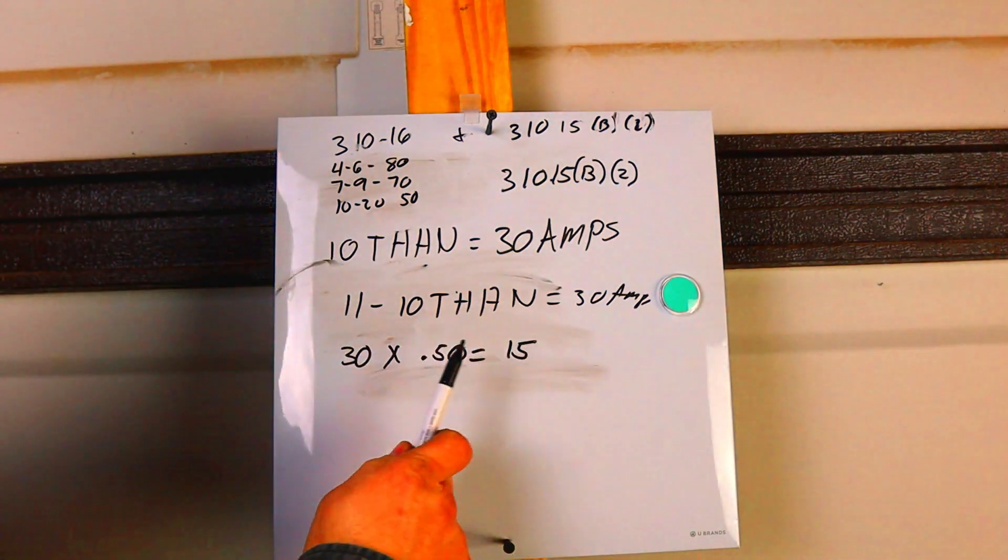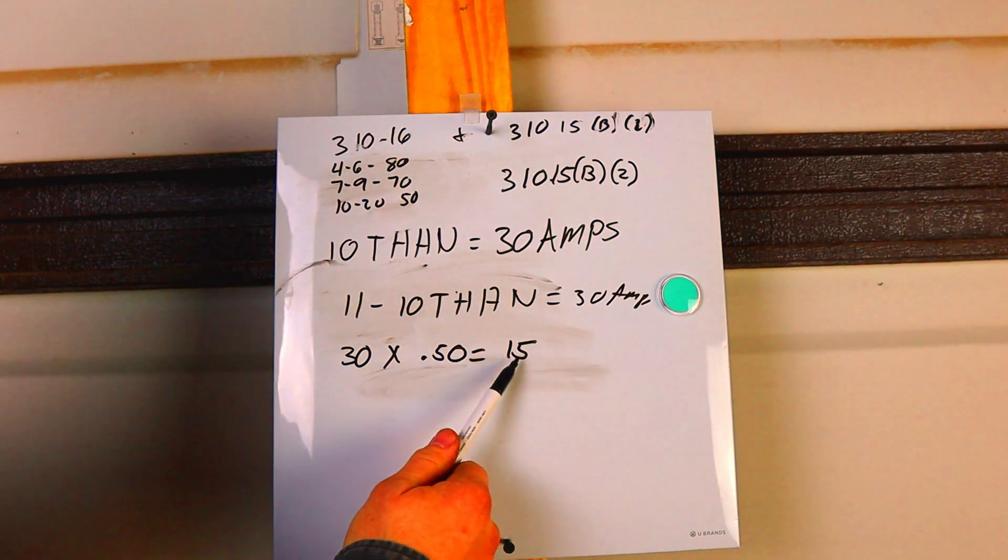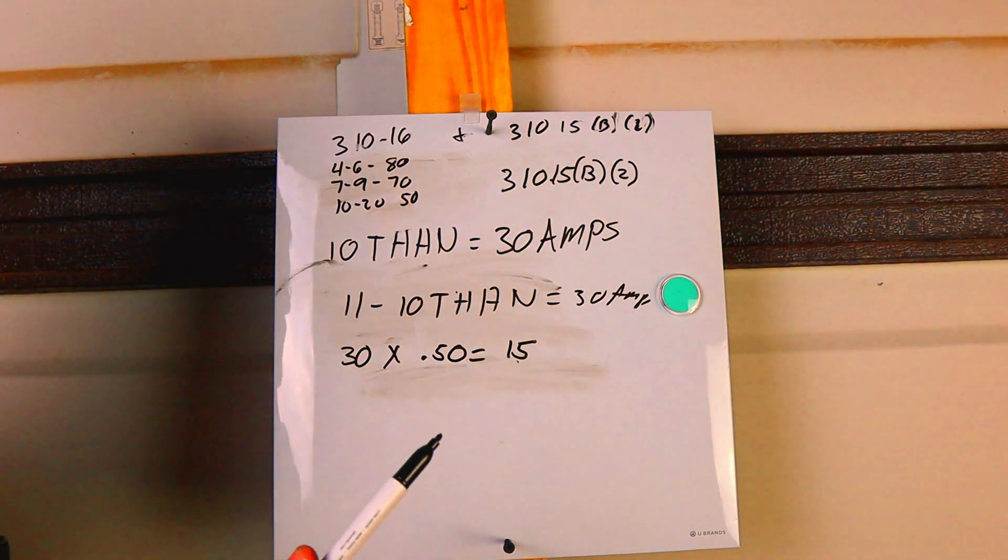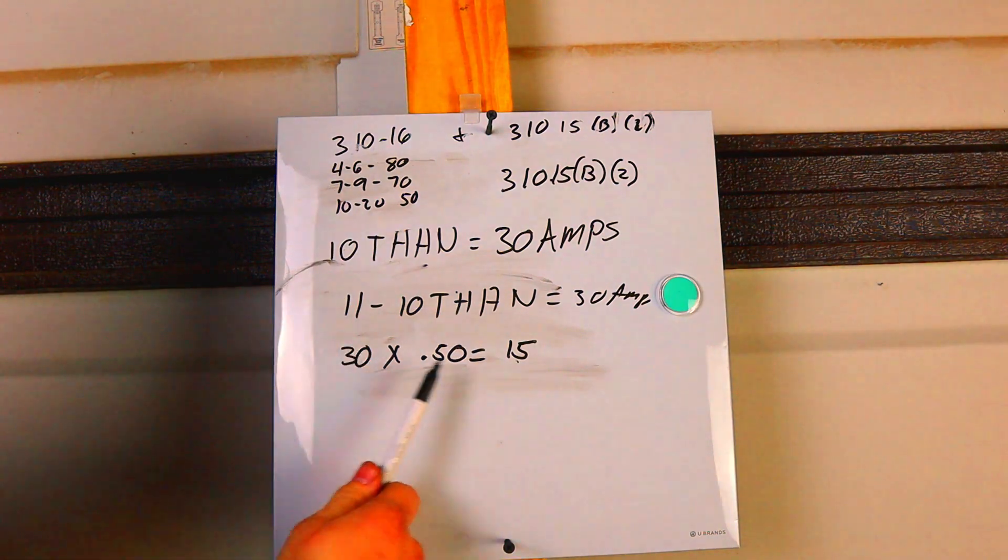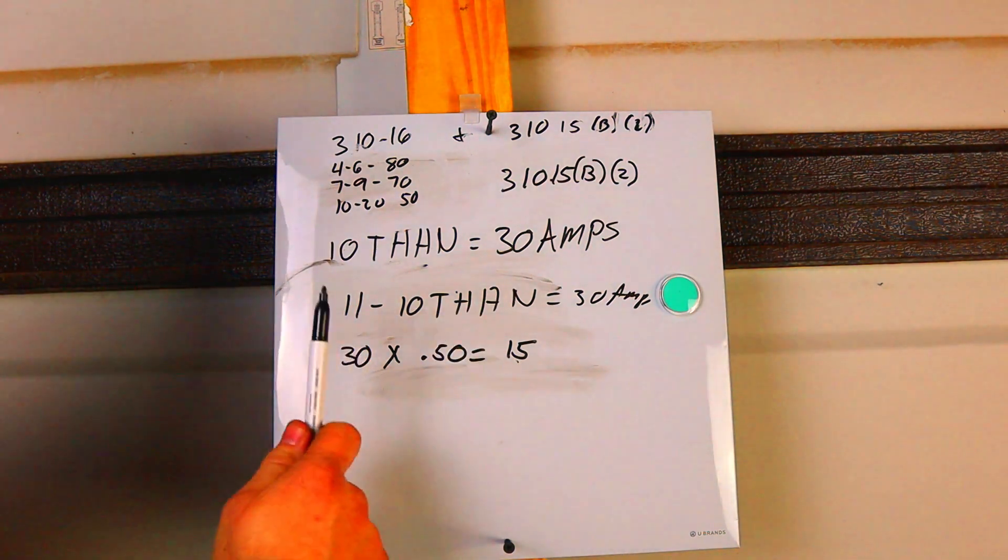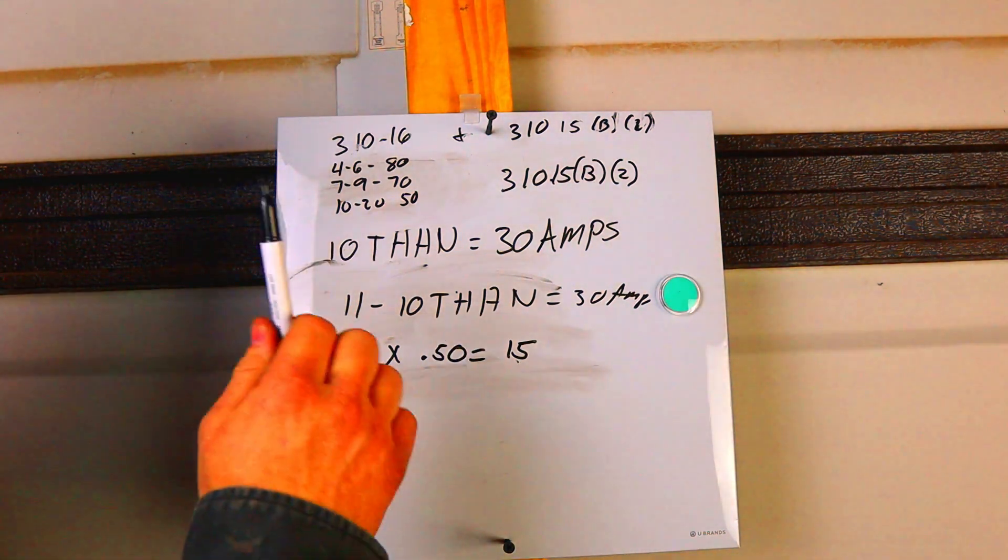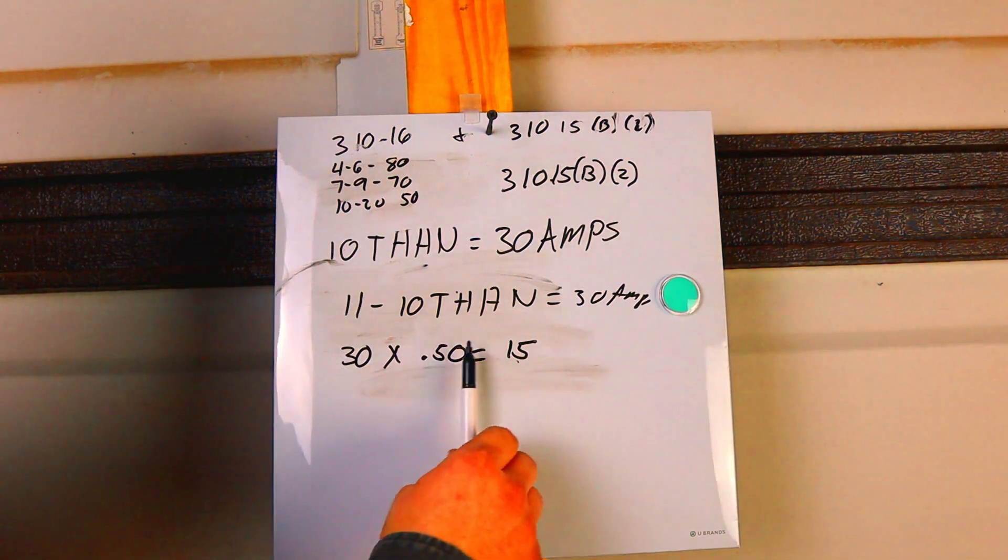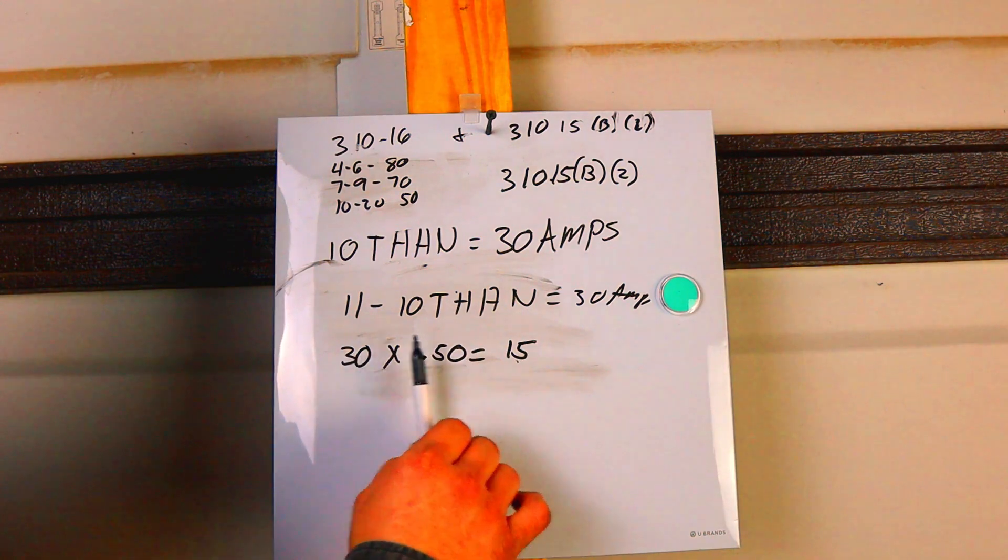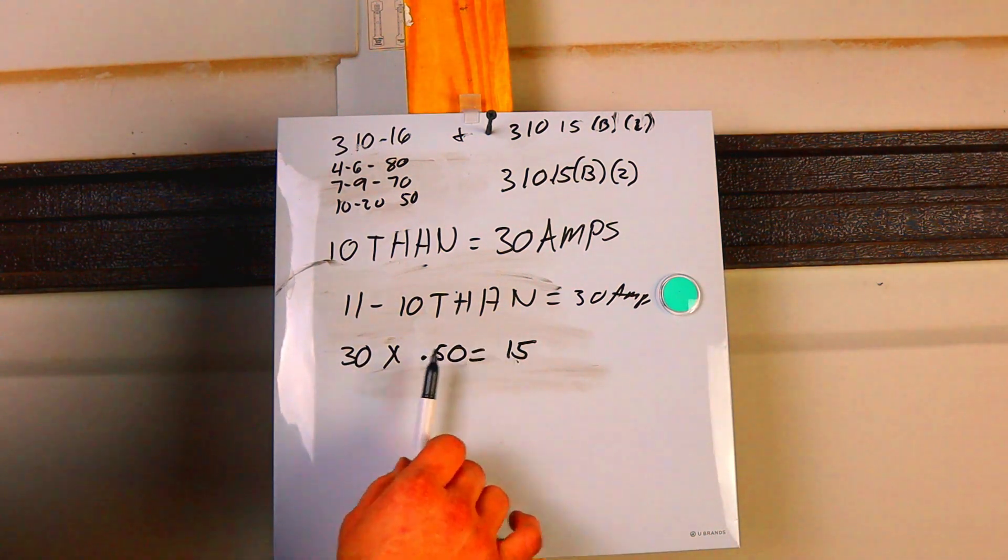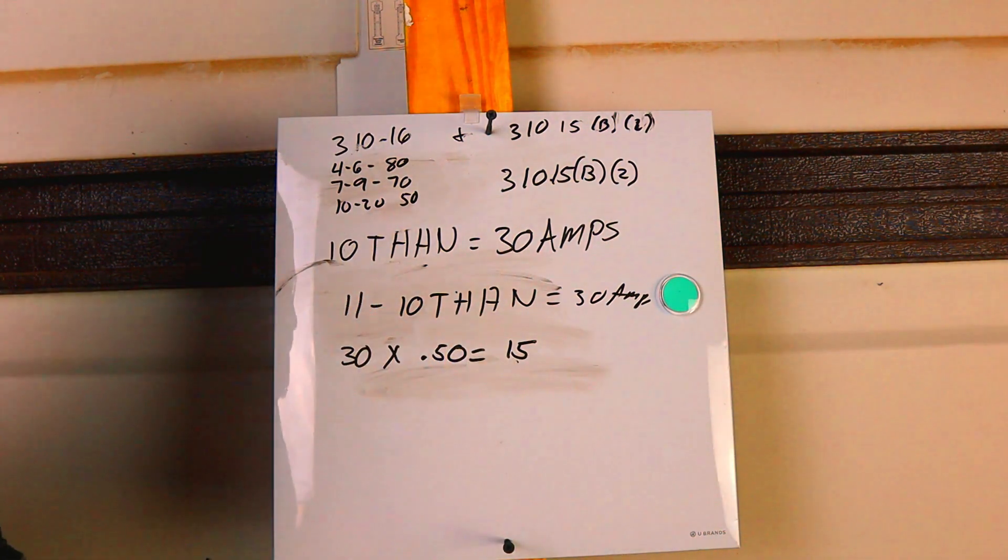So now if we need 30 amps over there, we're only going to be able to get 15. So that right there tells you that you're going to have to bump up your wire size to whatever it takes to get to 30. Now, we're not going to go into that right now, but I'm just showing you guys basically what you need to do. You're only going to get 15 amps if you have 11 wires in a conduit. So I hope that clarified a few things and it made you understand that you can't just put X amount of wires in a conduit.